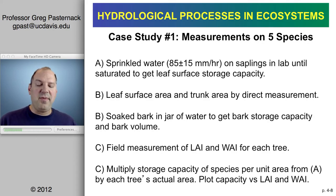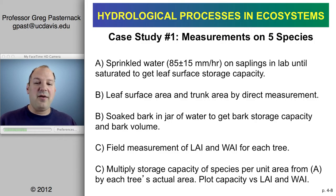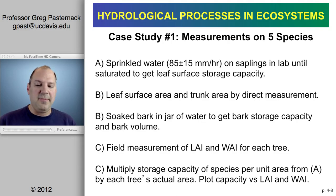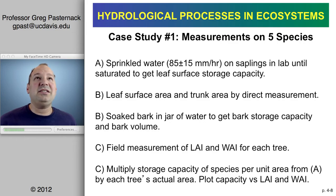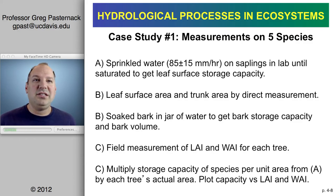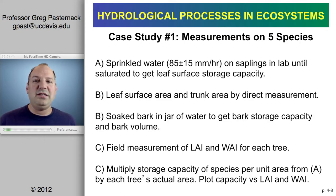They then calculated storage capacity per unit area for each species based on sapling measurements and bark data, and scaled that up to full-size trees if you know the area of a full-size tree. The downside is this assumes that a sapling's capacity to hold water is the same for a full-grown tree — no scale dependence — which isn't entirely certain. But it's a common technique since you can't exactly hang a vast tree from a crane.